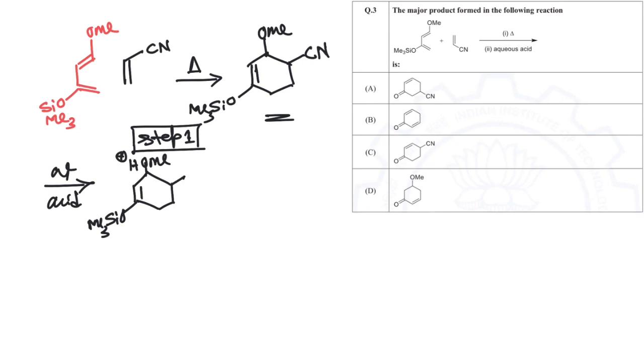After this protonation, it becomes a leaving group. So this O-silicon group will push and kick off this group as a methanol molecule. You are going to get this oxygen-based cation. This is an intermediate of the reaction.